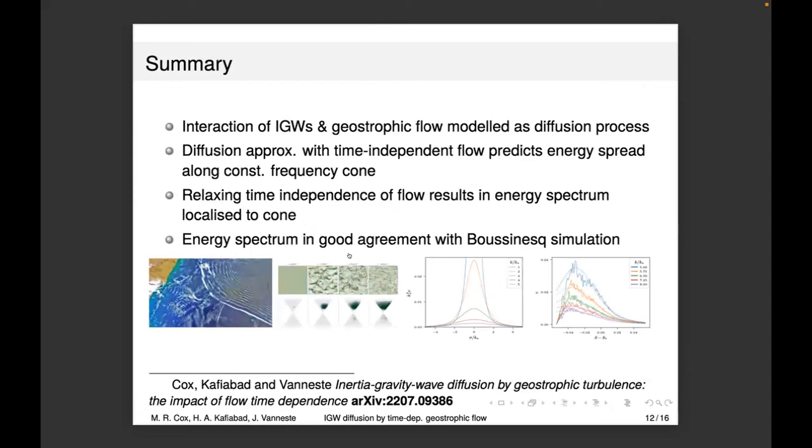First conclusion: the interaction of inertial gravity waves and geostrophic flow models a diffusion process. Time-independent flow suggests diffusion only along the cone, not across the cone of constant frequency. By relaxing this assumption, we found the energy spectrum is still very localized to the cone and in good agreement with the Boussinesq simulation. This has just been accepted for JFM and should be online in a couple of weeks. The arXiv version is available.